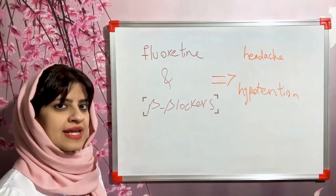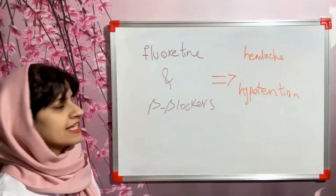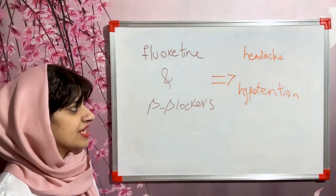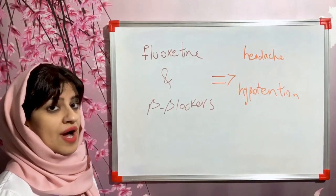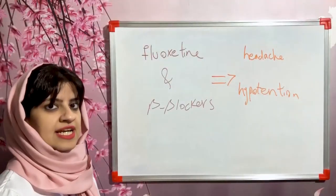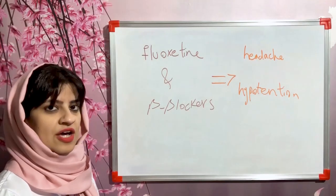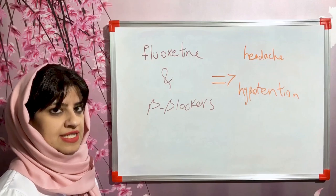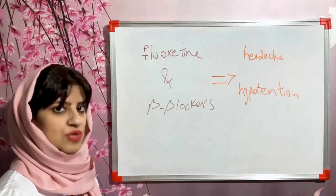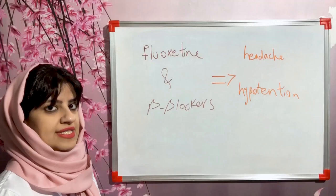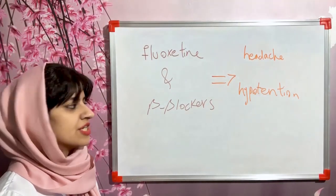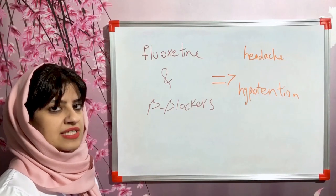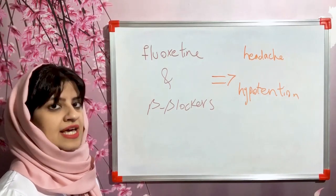Taking fluoxetine with beta blockers may increase the blood levels of beta blockers. Why is that? Fluoxetine inhibits the enzyme cytochrome P2D6, which is the responsible enzyme for the metabolism of beta blockers. When taking these medications together, the blood levels of beta blockers may be increased because their metabolism is inhibited.